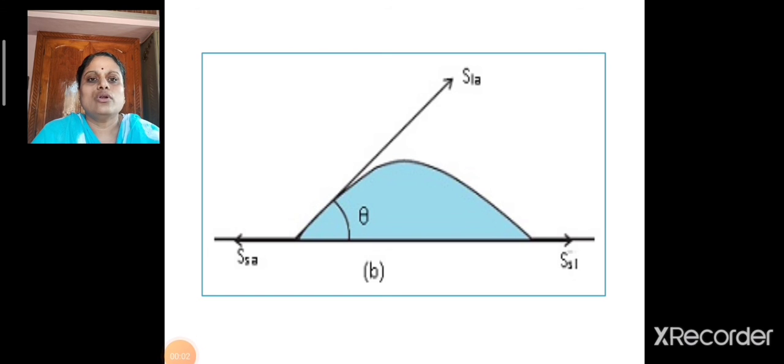Now, take the second case. The angle between SSL and SLA is acute. So, this liquid will spread on the surface of the solid.